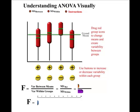This is a learning object to help you understand how ANOVA works. The null hypothesis for ANOVA is that the groups you're doing analysis on have the same mean, and the alternative hypothesis is that at least one of the groups has a different mean.